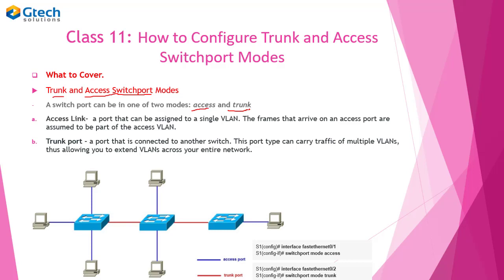A port can be either in an access mode or a trunk mode. An access link or port is a port that is assigned to a single VLAN. The frames that arrive on the access port are assumed to be part of the access VLAN, which by default is VLAN 1.